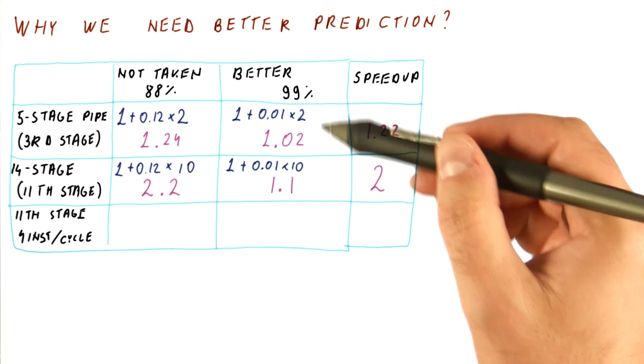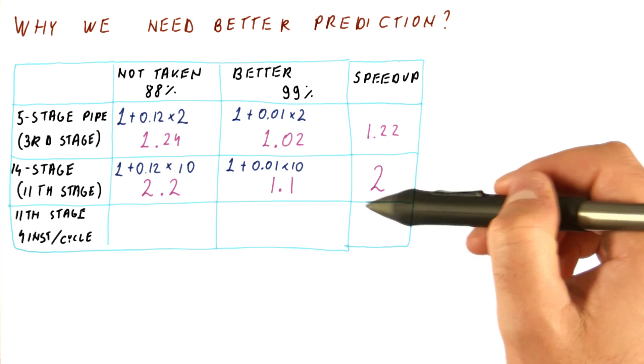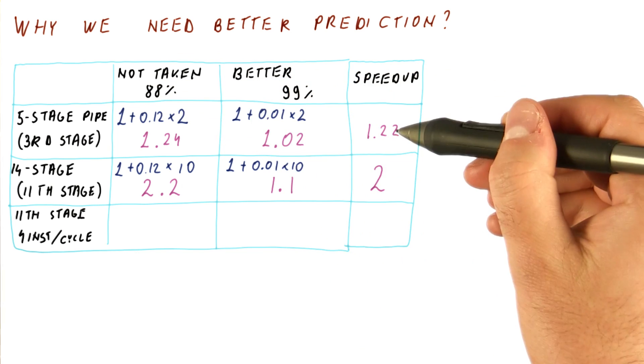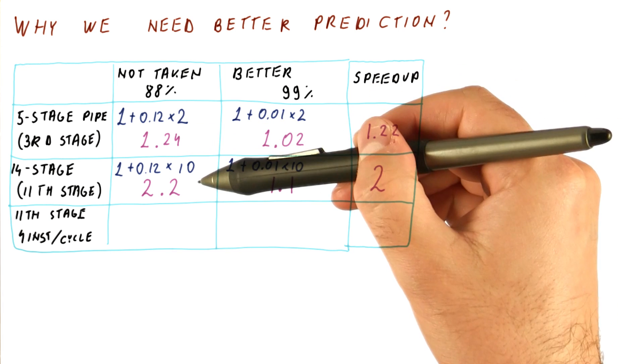So as we can see now, the better predictor is giving us twice the performance of the not taken predictor. And we have seen this already, that the deeper the pipeline, the more benefit we get from a better predictor.